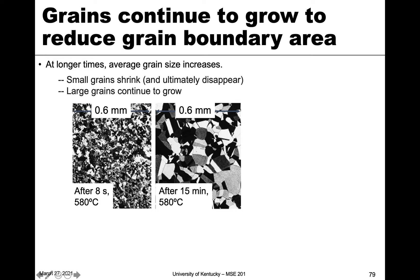Here's the image of the structure right after it's completely consumed those prior grains that were cold-worked. We have these really, really small grains. Those really small grains still have a lot of grain boundary area, which is a defect — as we talked about in the defect chapter. That is a source of high energy in the material. So to reduce that energy, the grains will grow. With larger grains, we have lower grain boundary area and therefore lower grain boundary energy. At elevated temperatures, grains tend to always grow just to remove that grain boundary area — that's always a driving force.